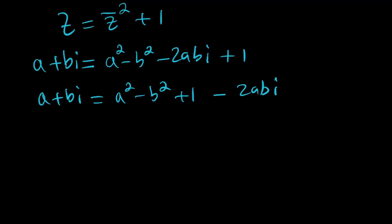Now, when two complex numbers are equal, what do we know? The real parts are equal. So A is equal to A squared minus B squared plus 1. And then, what else can we say? Well, B which is the imaginary part is equal to negative 2AB which is the imaginary part. So B is equal to negative 2AB. So we got a system.